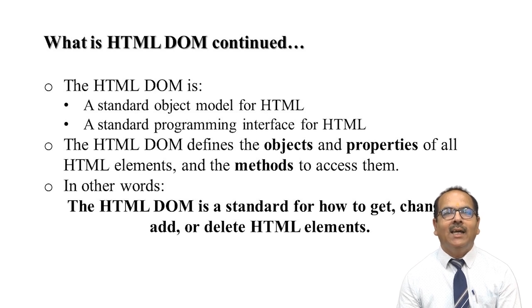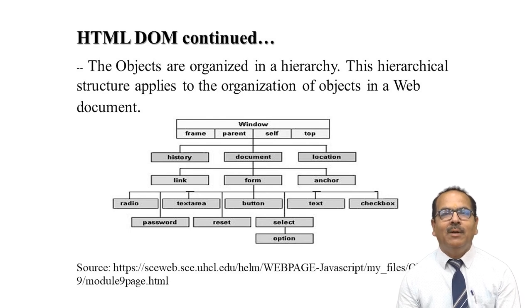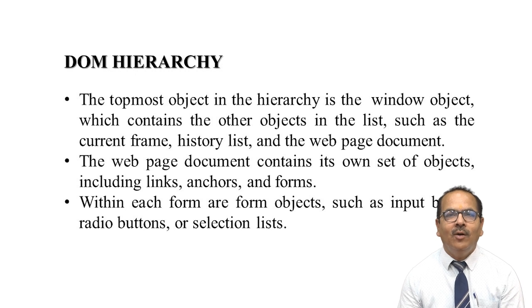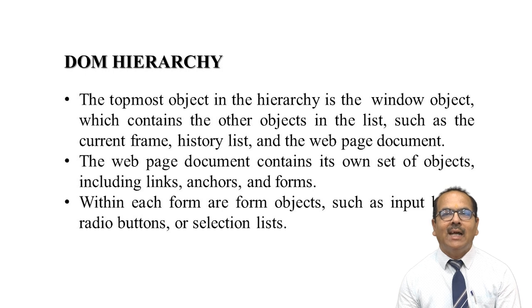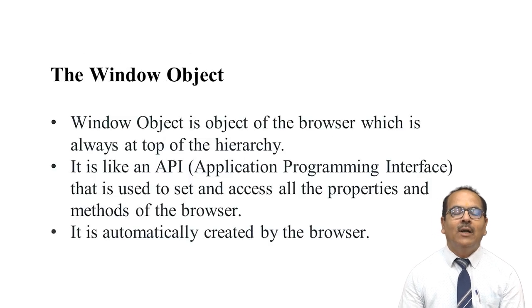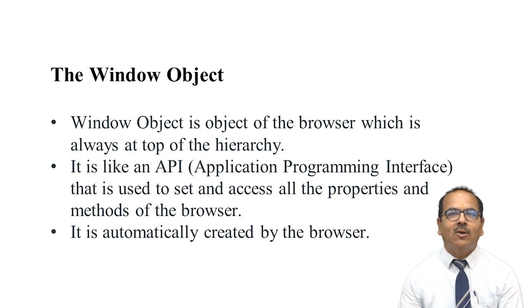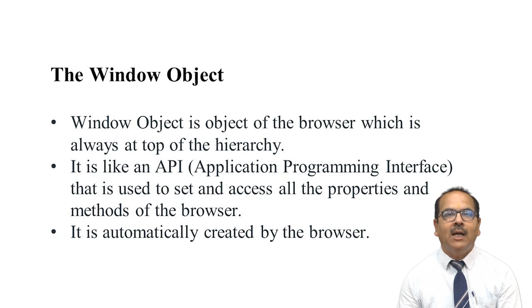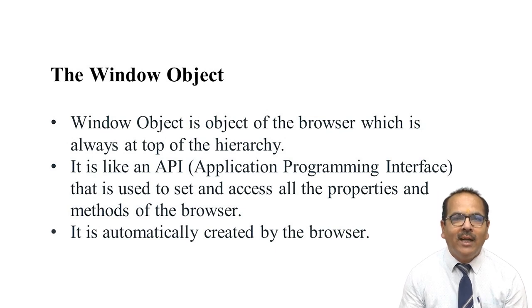Looking at the DOM hierarchy, objects are organized with window at the top. The window object contains other objects like the frame list, history, and the web page document. The document contains objects like links, anchors, and forms. Within a form we have input boxes, radio buttons, and selection lists. The window object is always at the top of the hierarchy, like an application programming interface to set and access all properties and methods of the browser, and it is automatically created by the browser.